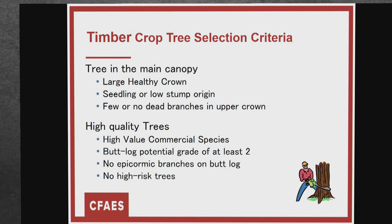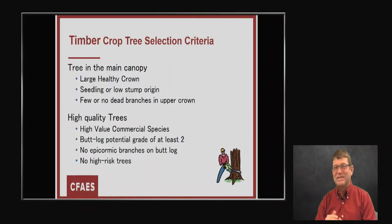We don't want sprouts on the tree, because sprouts become branches and branches create knots. We don't want trees that are leaning or that have splits or potential problems. Another important factor: match the tree to the right site. Say you're trying to manage yellow poplar, which needs quite a bit of moisture — if you do it on a really dry site, it's not going to do well. Or a walnut on a really dry site with thin soils won't do well either. Pick a species for the location you're on.